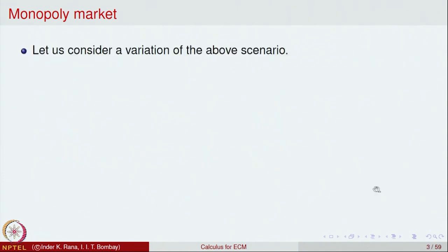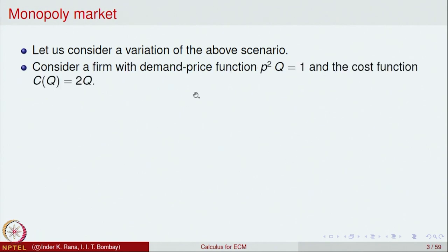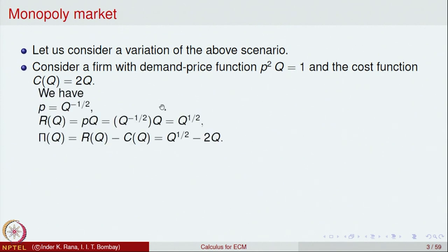Let us look at one more example — a variation. Consider a firm with demand price function P²Q = 1 and cost function C(Q) = 2Q. If we write P as a function of Q, then P² = 1/Q, so P = Q^(−1/2).